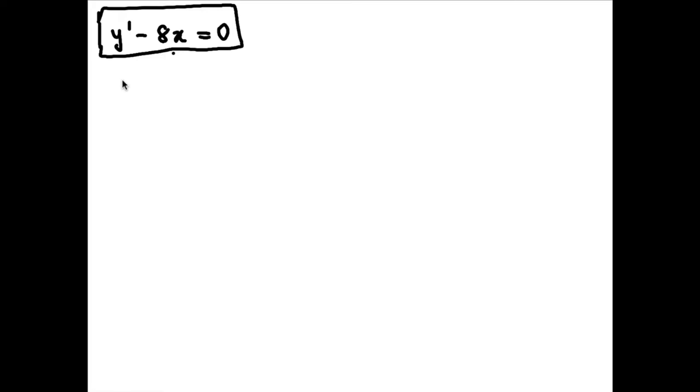So first thing I'll do for these problems is simply rewrite this as dy/dx minus 8x equals 0. So recall that these mean the same thing, they're just different forms of notation. And for this problem, it's easier to manage if we do it in this notation.